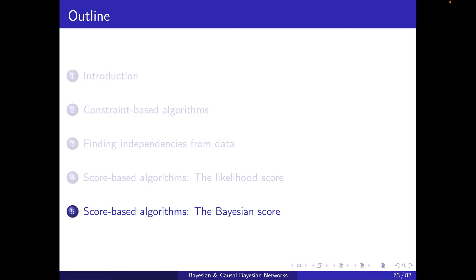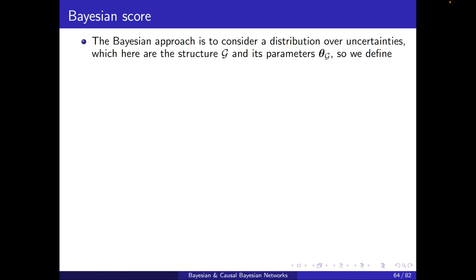Hello and welcome to Section 5, Score-Based Algorithms, the Bayesian Score. The Bayesian approach is to consider a distribution over uncertainties. What are our uncertainties when learning a structure? It's the structure g and its parameters theta g.